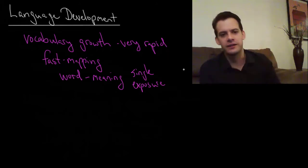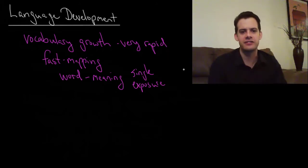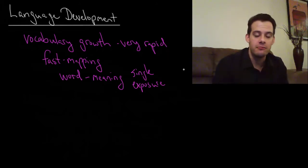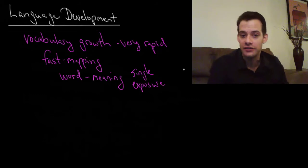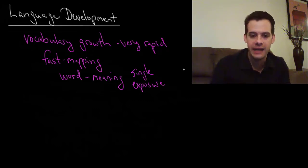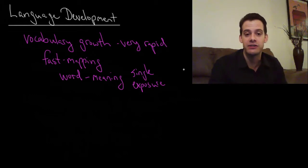So the child sees something and asks what's that and mom says that's a doggy and now the child knows the word doggy and a week later the child sees a doggy and points to it and says doggy. They've connected those sounds with the meaning immediately after this single exposure. So this is part of the explanation of how we're able to acquire so many words so quickly.